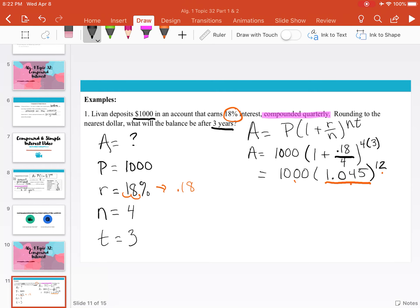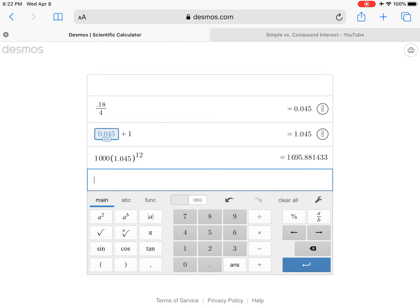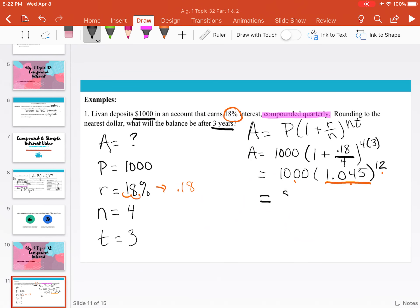So I can now plug this into my calculator. We'll get 1,000 times 1.045 raised to the 12th power. And we get $1,695.88. But remember, the problem wants us to round to the nearest dollar. So that would be $1,696.